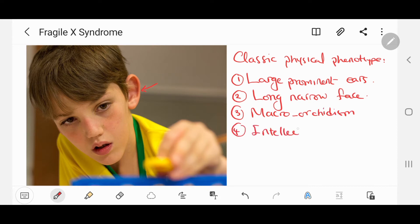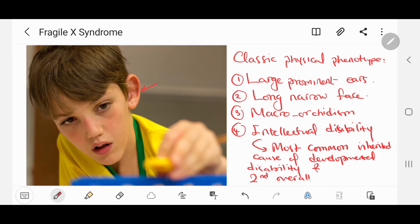And finally, intellectual disability. In fact, Fragile X Syndrome is the most common inherited cause of developmental disability and should always be considered when we have a child with developmental disability. It's the second overall cause of intellectual disability after Down Syndrome.